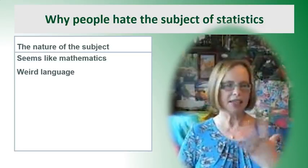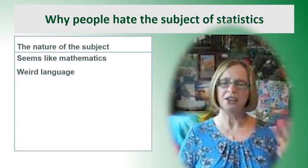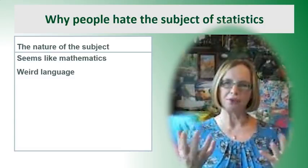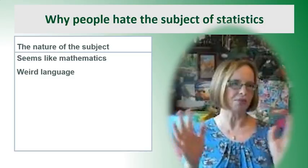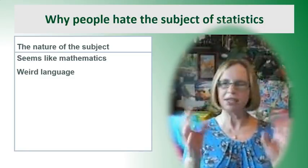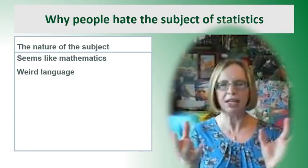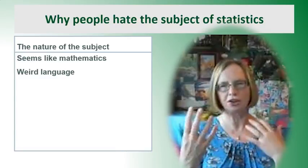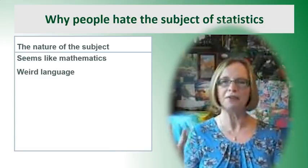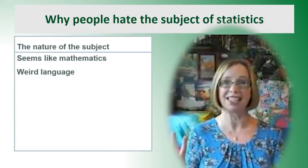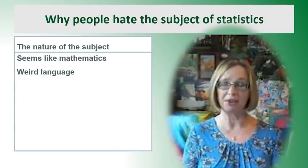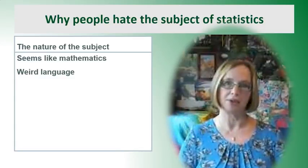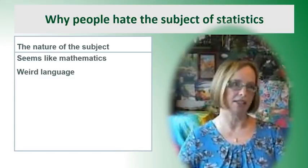The next thing is that statistics has weird language. It uses words we normally use in everyday life — like 'random,' 'distribution,' and 'mean' — but they mean something completely different in statistics. You've got to learn the new meanings, and then there are other words like 'sampling error' and 'non-sampling error' which make no sense.